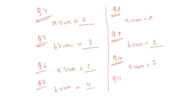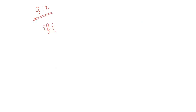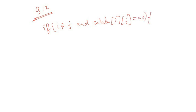For question number eleven, B var equals 6. For question number twelve, the correct answer is: if i not equals to j and colab[i][j] equals to 0, return false.